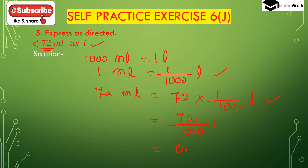We have to place 3 digits after the decimal place. In the numerator there are only 2 digits, so we place one more zero before digit 7. So it will be 0.072 liter. Therefore 72 ml is 0.072 liter.